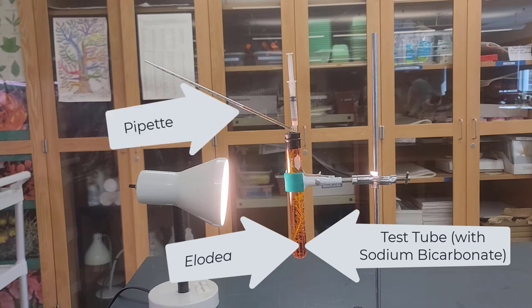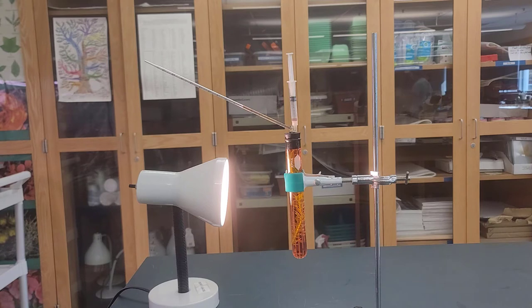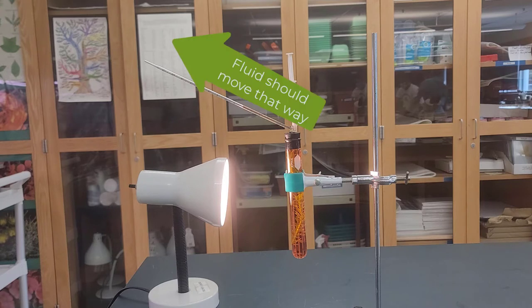We have a pipette attached to that and a syringe so we can adjust the fluid level, and what happens is we shine the light on the test tube with the Elodia in it. The plant does photosynthesis and it should push the fluid level up as photosynthesis occurs.